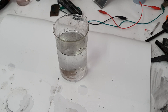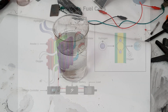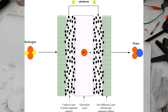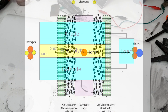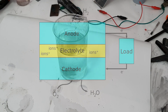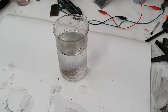So what is a hydrogen fuel cell? A hydrogen fuel cell generates electricity when you add some hydrogen and oxygen, and you get some electricity and water as a by-product.